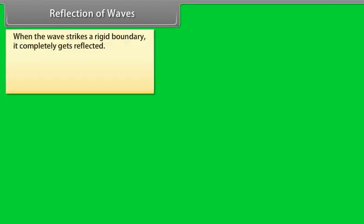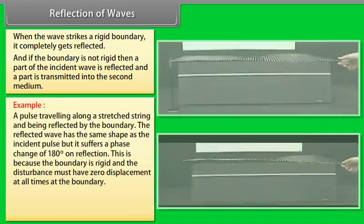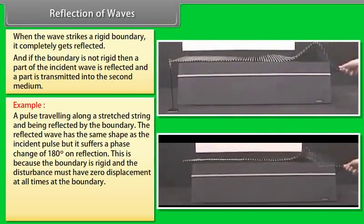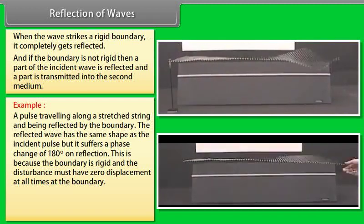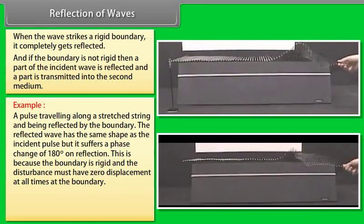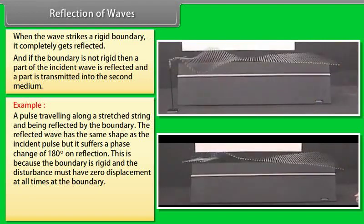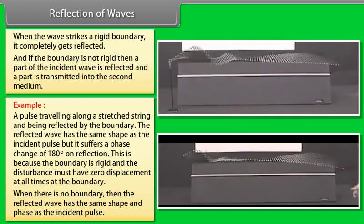Reflection of waves: when a wave strikes a rigid boundary it is completely reflected. If the boundary is not rigid, part of the incident wave is reflected and part is transmitted into the second medium. For a pulse traveling along a stretched string reflected by a rigid boundary, the reflected wave has the same shape as the incident pulse but suffers a phase change of 180°, because the disturbance must have zero displacement at the boundary at all times. When there is no rigid boundary, the reflected wave has the same shape and phase as the incident pulse.